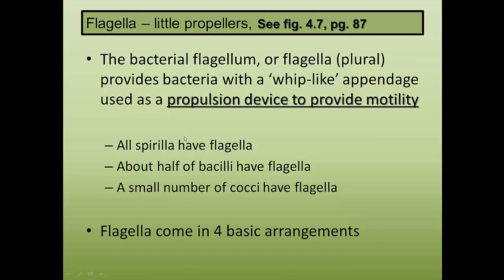The first external structure is called flagella (plural) or flagellum (singular) — essentially a bacterial tail used for propulsion and motility. Spirilla (spiral-shaped bacteria) all have flagella. Only about half of bacilli have flagella, and even fewer cocci have flagella. So the percentage depends on what shape you're looking at.